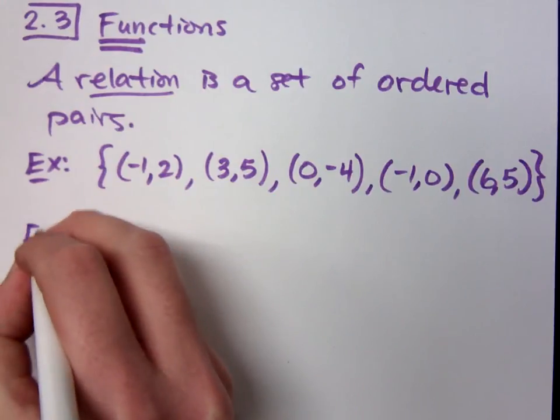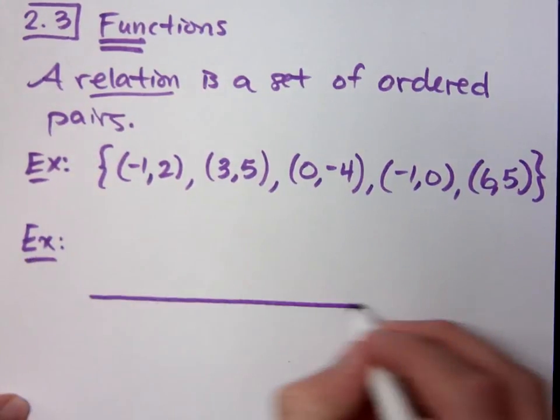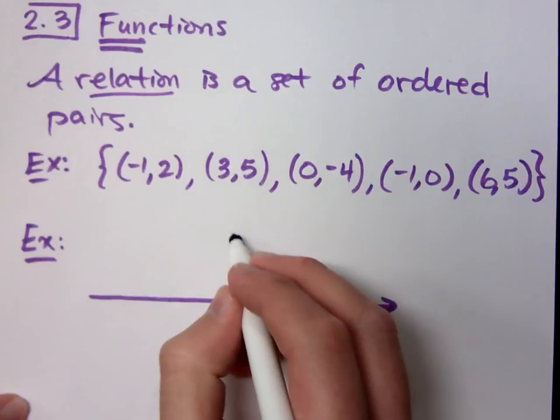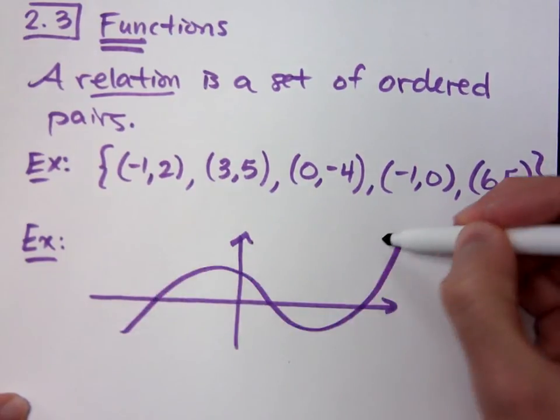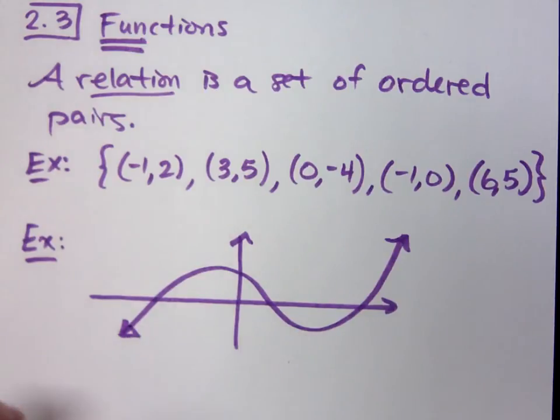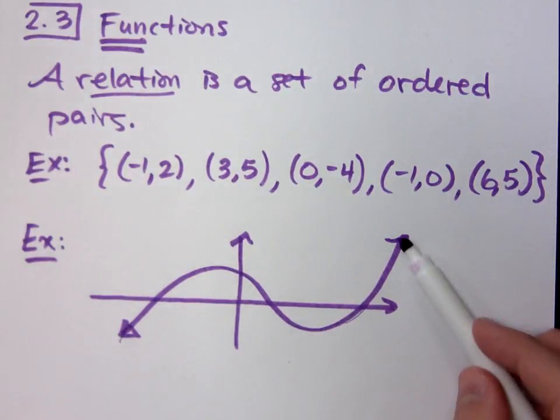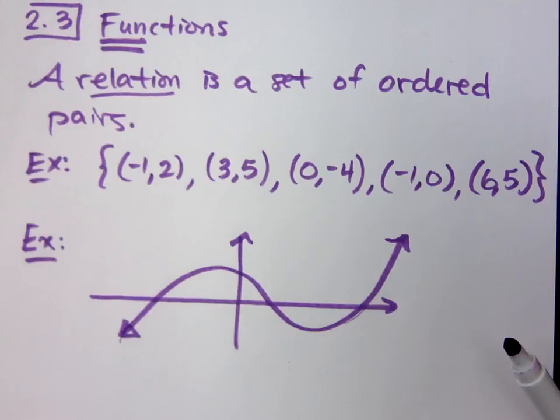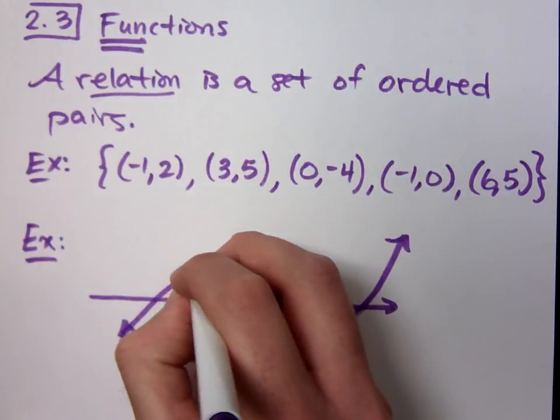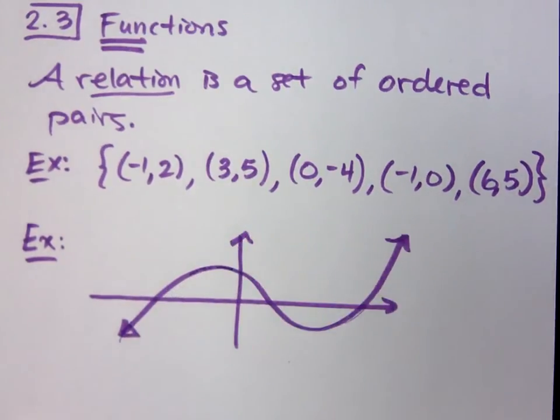We could have something that is a little bit more complicated. This is another example of a relation. How many ordered pairs make up this relation? A lot, right? An infinite number of points. Between any two points are an infinite number of points, so there's an infinite number of pieces there. I'm not going to be able to list all of them out, so we have a graph here. We're going to spend a lot of time talking about graphs.